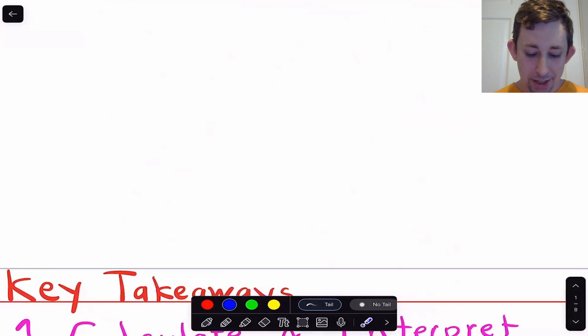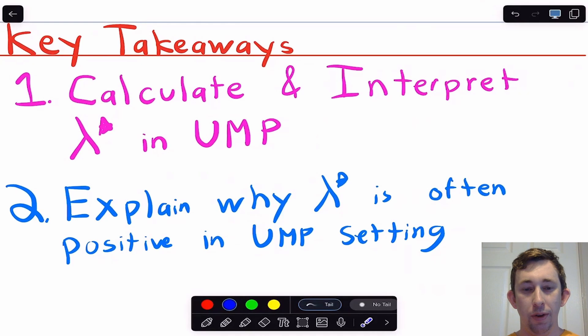What I want you to get out of this video: first we're going to review how you can calculate Lambda Star in any constrained optimization problem when you use Lagrangian, but really I want to talk about how we're going to interpret Lambda Star in the utility maximization problem context. Specifically, I want you to be able to explain why it's often positive and exactly what it means to be able to interpret that number once you get it.